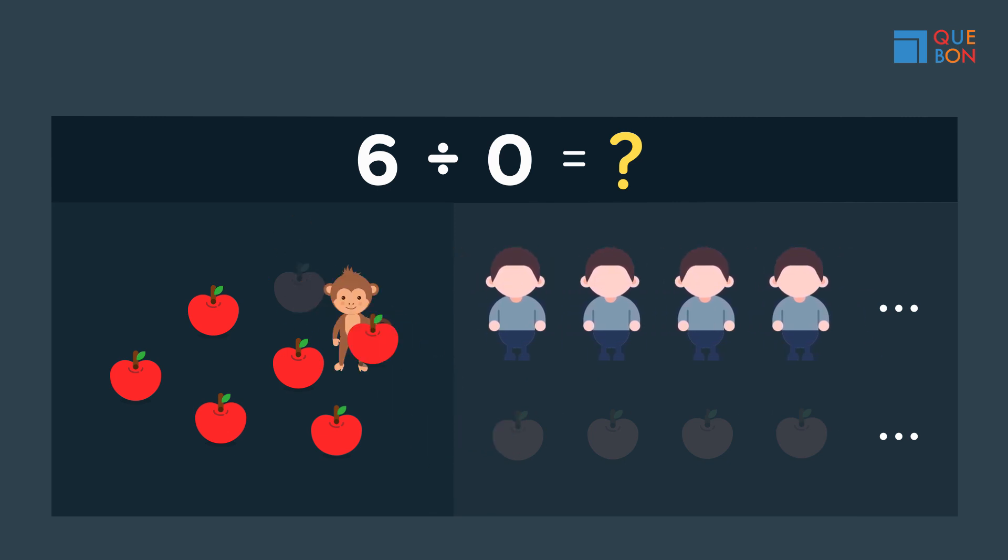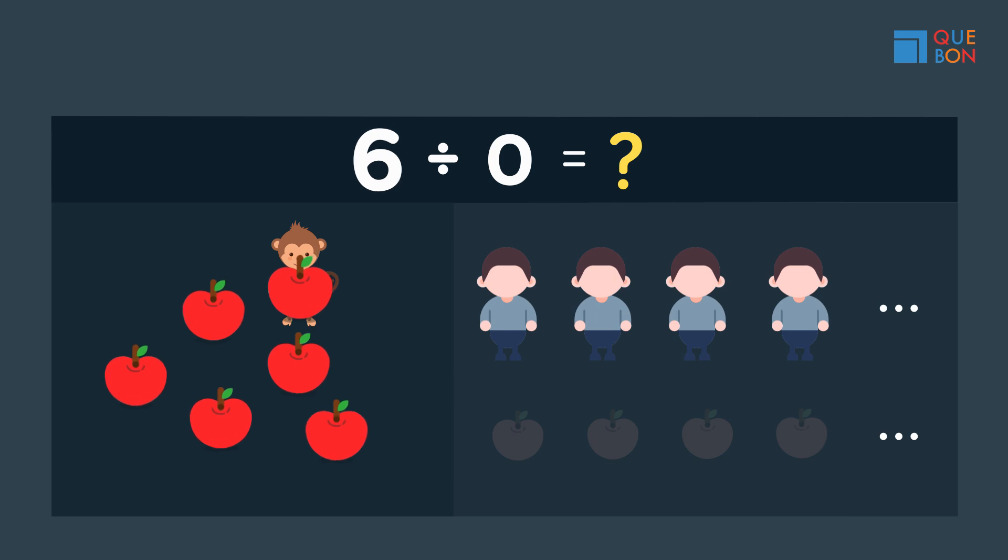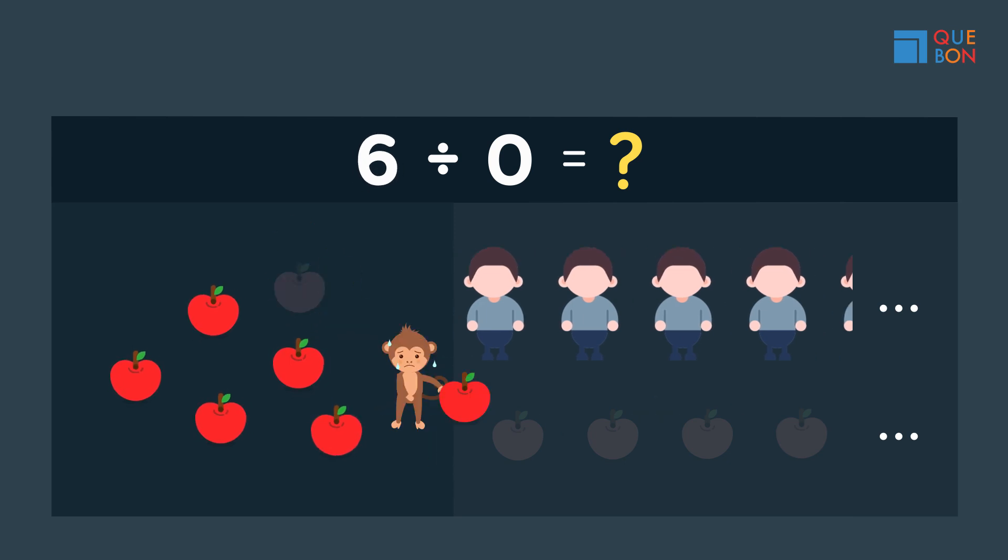As mentioned earlier, division goes on until there is nothing left to share. We still have six apples left. Off goes the monkey to keep distributing those apples. No matter how fast the monkey is, nor how many years pass by, it can't share the apples.